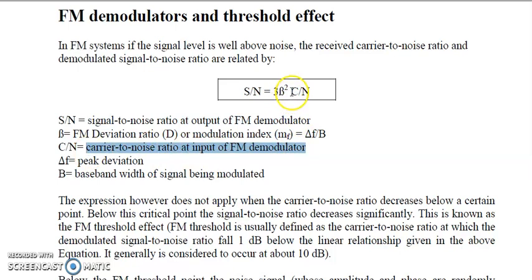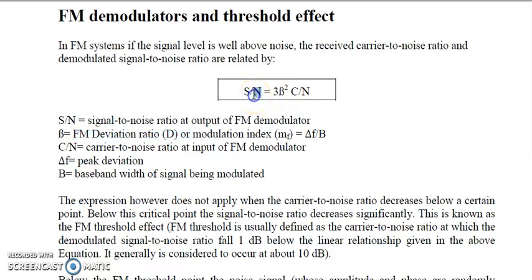For the demodulator, the carrier-to-noise ratio is the input, and this input is multiplied by 3 beta squared. For a baseband signal with a single modulating frequency, beta is the modulation index M_F. If the modulating signal comprises many frequencies, beta is the FM deviation ratio D. So the signal-to-noise ratio at the FM demodulator equals 3 beta squared times C/N.